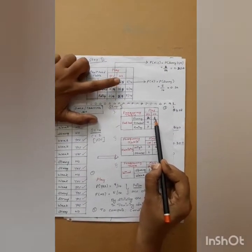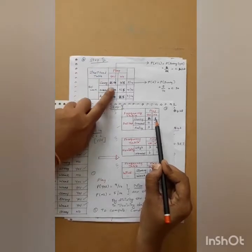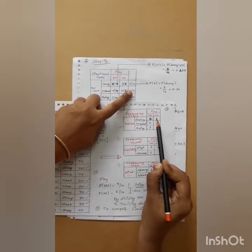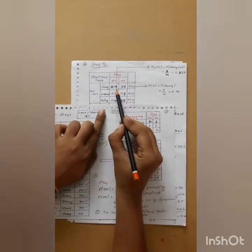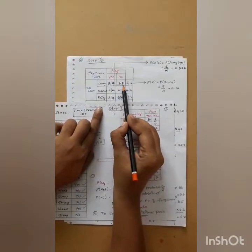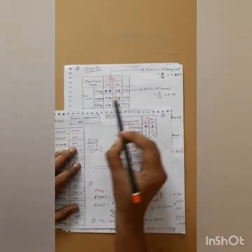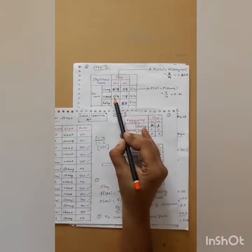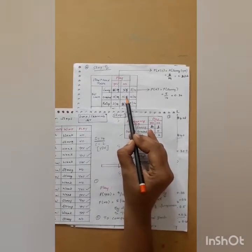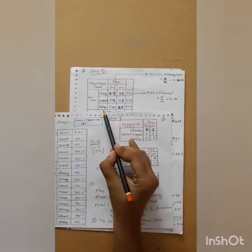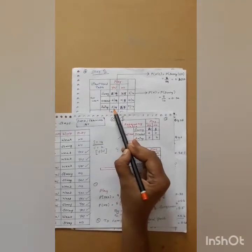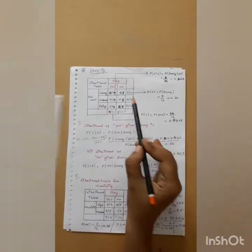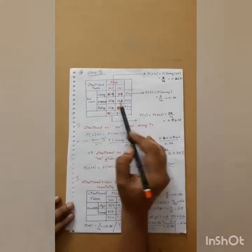The reason we use 9 and 5 is that the probability of play (yes) is equal to 9 divided by 14, and the probability of no is equal to 5 divided by 14. Likewise, you have to compute for overcast and rainy the probability of yes and probability of no. This gives us the overall likelihood table for the attribute called outlook.